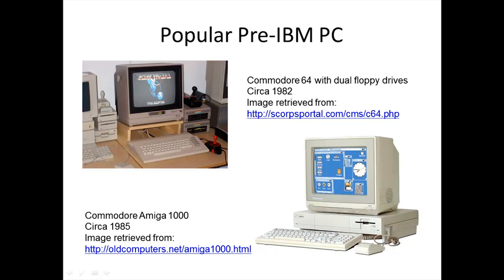Early personal computers were developed primarily in a kit format, similar to amateur ham and crystal radio sets. Some of the more popular kits referenced on the internet are the Altair 8800 and the Heathkit H8. These kits could be ordered through the mail and used by individuals interested in dabbling with electronics. Many of these machines were built around central processing units and transistors that had recently become available.